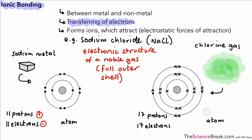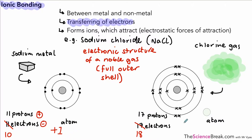You can see that sodium now has a full outermost shell, and if you look carefully at the chlorine as well, it has a full outermost shell too. However, we have lost an electron from sodium, so it now has 10 electrons, and chlorine has gained an electron. There is now an imbalance in positive and negative charges: sodium has a plus one charge and chlorine has a minus one charge.